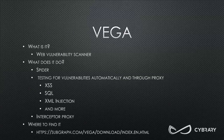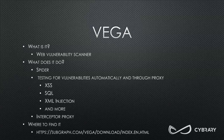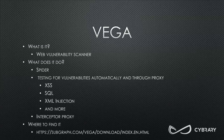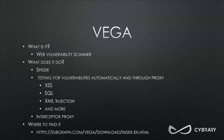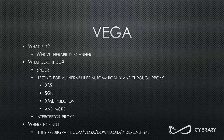We will be using Vega, which is a web vulnerability scanner. It spiders, tests for cross-site scripting, SQL injection, XML injection, and more. It tests for vulnerabilities automatically, and you can also set up a proxy to have it test through. Vega also has an interceptor proxy, which allows for manipulation of packets, which can come in handy. It can be found at the link here, or it comes pre-installed on Kali and Kali 2.